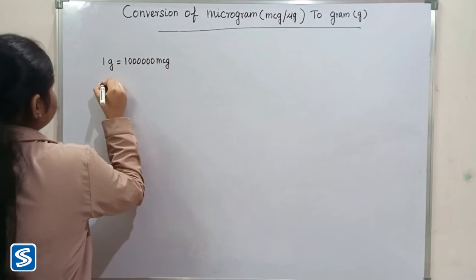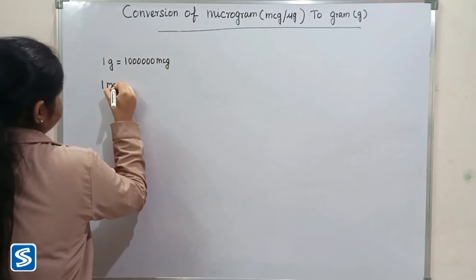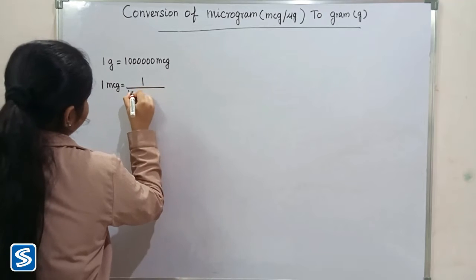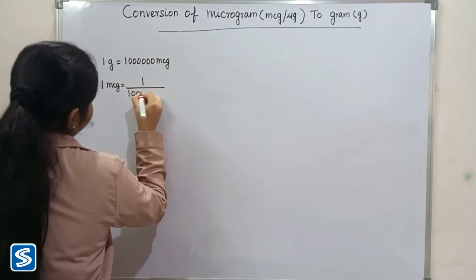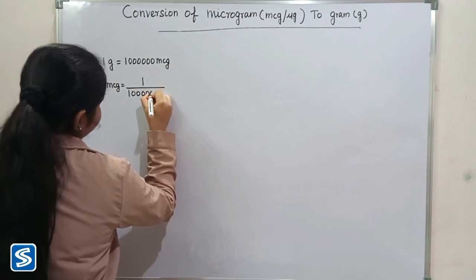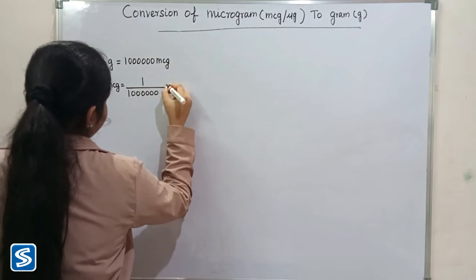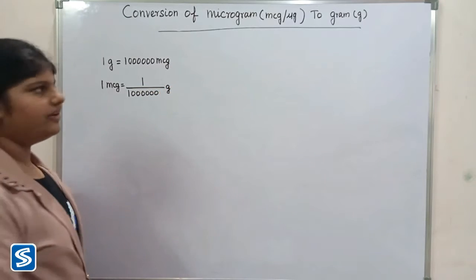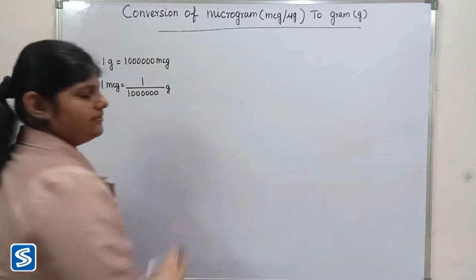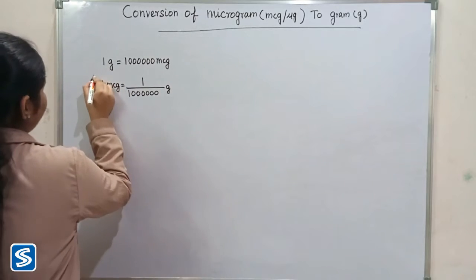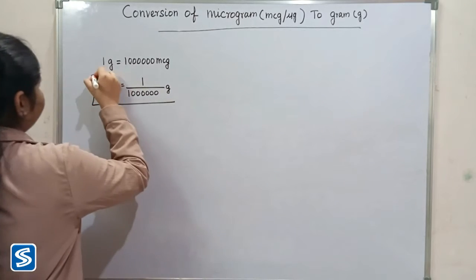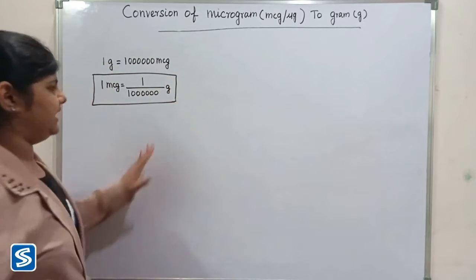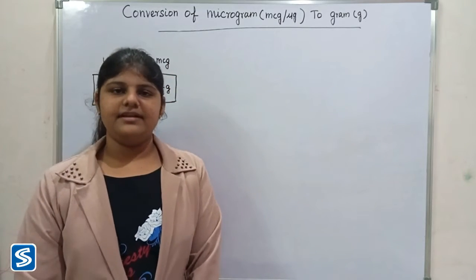So one microgram is equal to one by one million grams. The formula for converting microgram into gram is: one microgram is equal to one by one million grams.